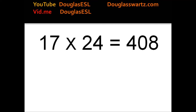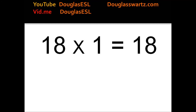17 times 24 equals 408. 17 times 25 equals 425. 18 times 1 equals 18.